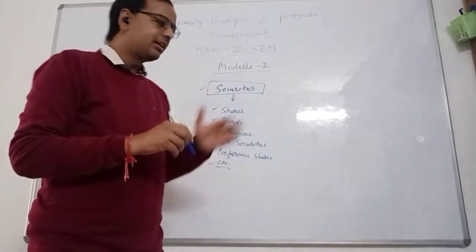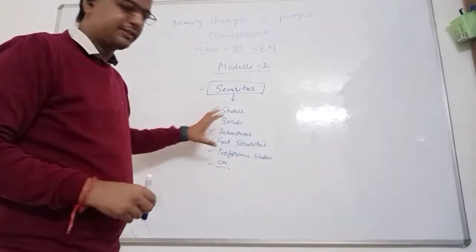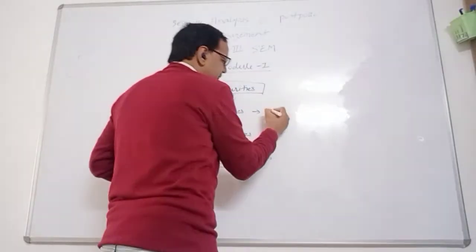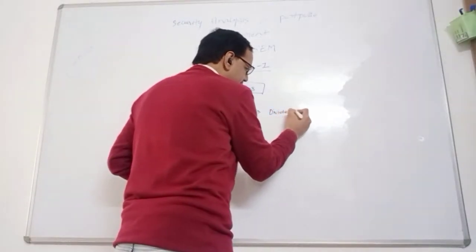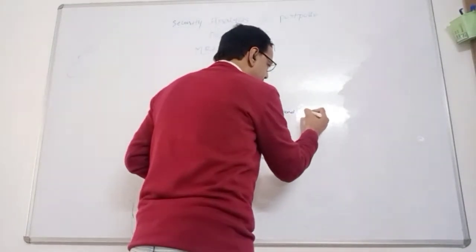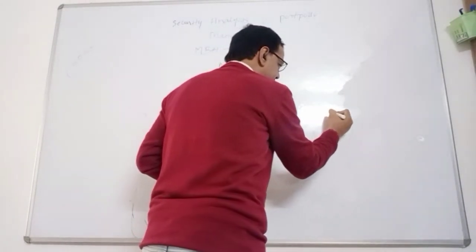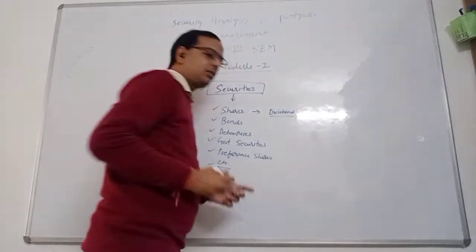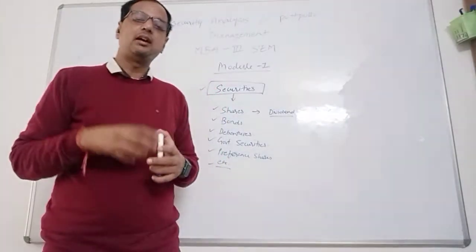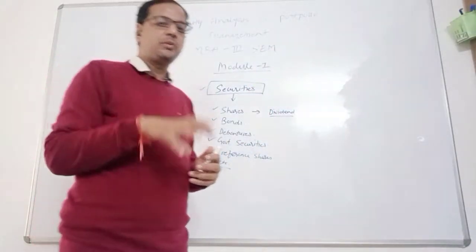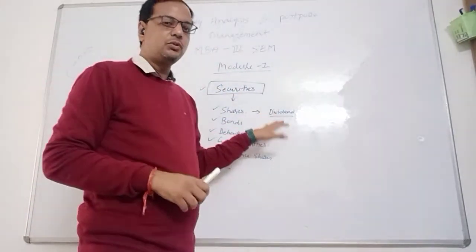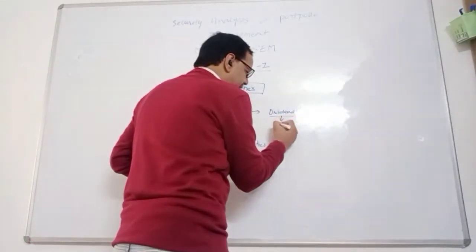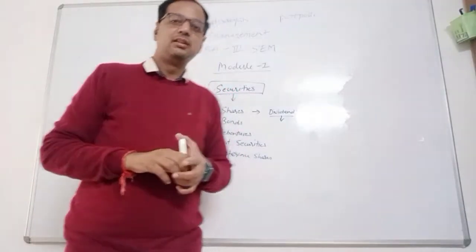You have earned dividend and capital gain. Dividend means you have shares from a company. If company earned profits, company distributed dividend to those persons who have shares in these companies. You have earned dividend, but it is not fixed.